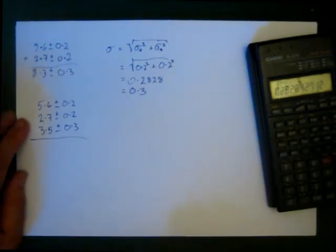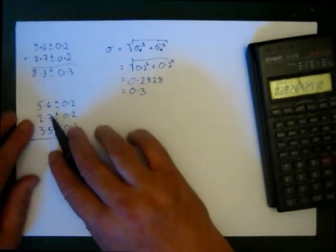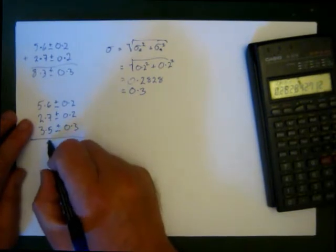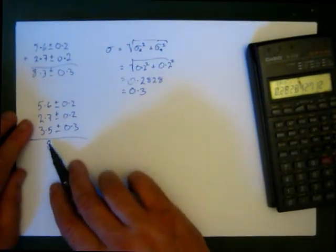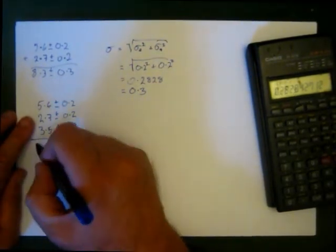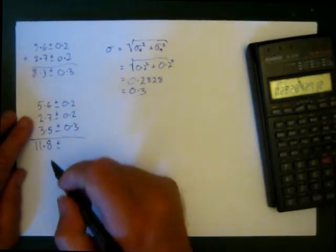Well, I just add up, just like we did before, to get the main value. 5.6, 2.7, 3.5. So that's going to be 11.8 plus or minus...